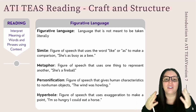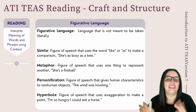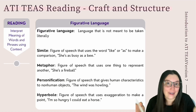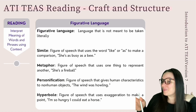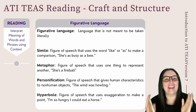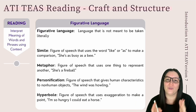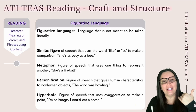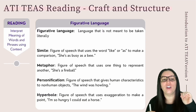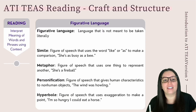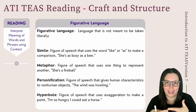A metaphor is a figure of speech that uses one thing to represent another. For example, 'she's a fireball' — she's not literally a fireball, but that comparison represents her energy or intensity. Personification is a figure of speech that gives human characteristics to non-human objects. For example, 'the wind was howling' — the wind is our non-human object and howling is the human characteristic being attributed to it.